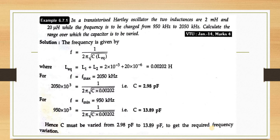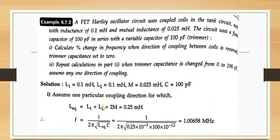This is a simple problem. Remember the frequency of oscillation equation F = 1/(2π√(LC)), where L is L_eq = L1+L2. Calculate C at maximum frequency and C at minimum frequency.